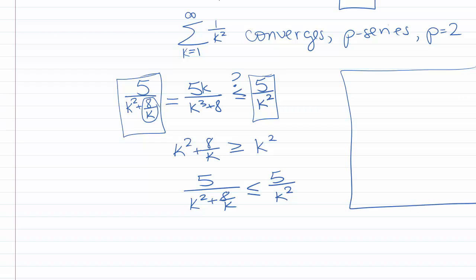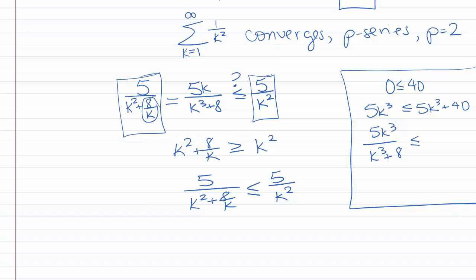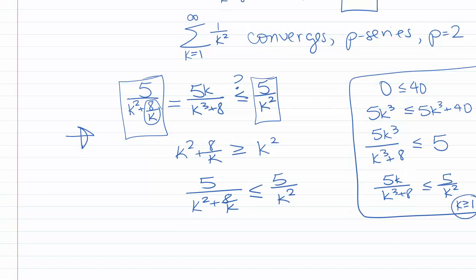Here's another argument you could make: 0 is less than or equal to 40, so 5k cubed is less than or equal to 5k cubed plus 40, which means 5k cubed divided by k cubed plus 8 is less than or equal to 5, so 5k over k cubed plus 8 is less than or equal to 5 over k squared. This only works when k is greater than or equal to 1, but since we only care about k greater than or equal to 1, that's fine. I prefer the first approach because it seems more intuitive.